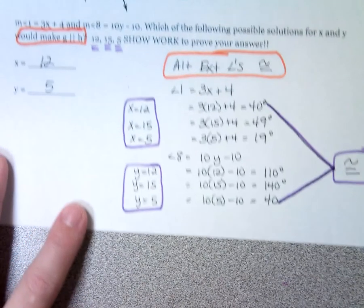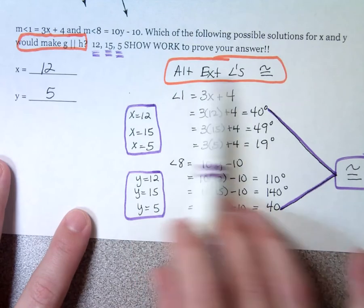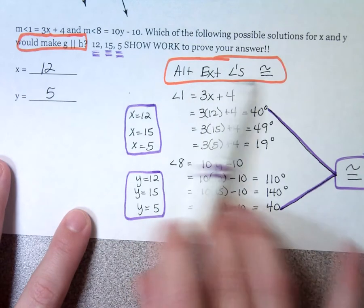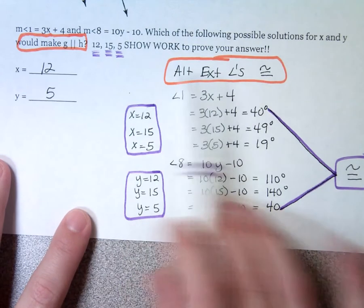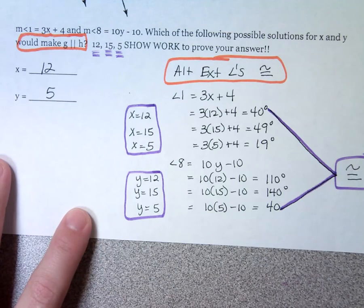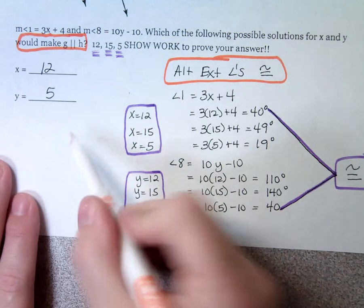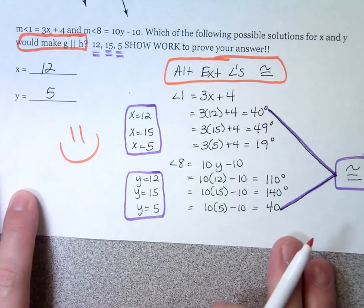If you want lines to be parallel: alternate interior and alternate exterior angles must be congruent, corresponding angles must be congruent, but same-side interior and same-side exterior must be supplementary — same side supplementary. Hopefully you guys are ready for your 6-weeks test. I wish you all the best!